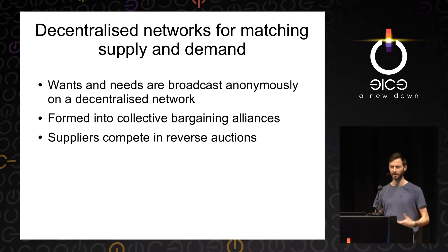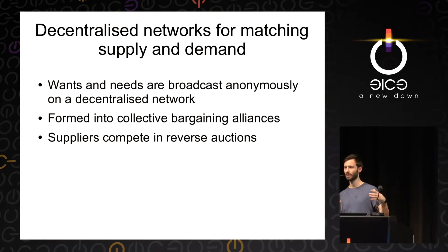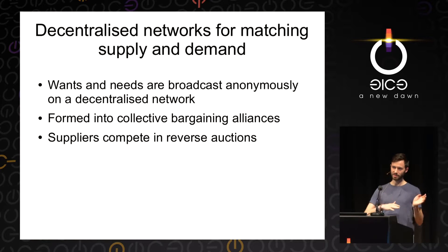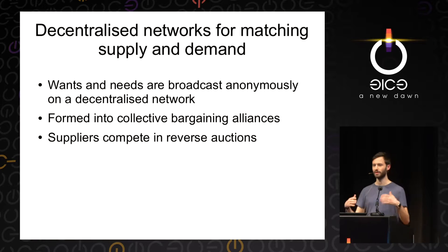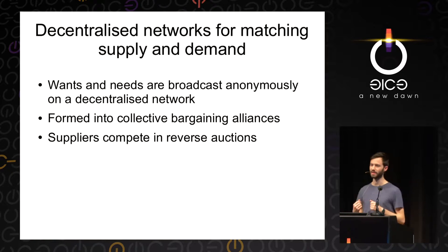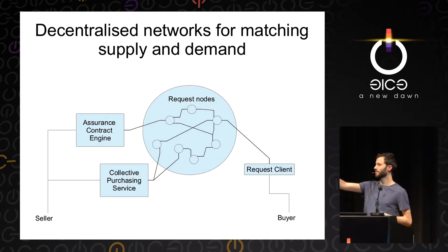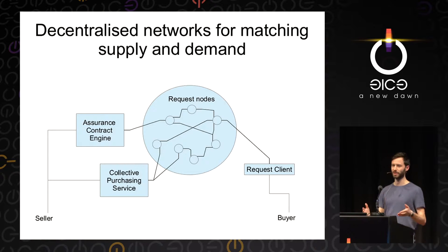The idea would be that your wants and needs are broadcast anonymously on a decentralized network. Say I want to buy a laptop with certain specifications and operating system, and there are some companies I don't want to deal with. All this can be broadcast to a decentralized network, aggregated into a collective alliance of people with similar needs, and suppliers can crawl that network to bid on those demands. Only then does my purchase become linked to my identity — if I want it to — when I complete the purchase. People are working on this; one project is called the Web of Needs.